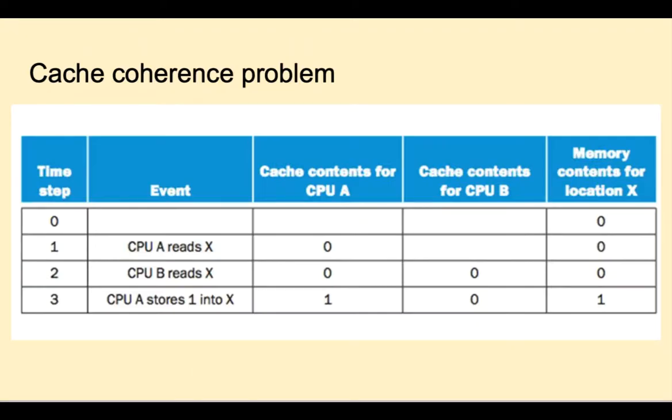Once we have more than one core on a system, we can have the cache coherence problem. Cores share the same physical address space. And this means that cores may end up with different values for a given location. That's shown in this table with four different time steps. At time step 0, memory location X contains a 0. CPU A or core A reads that value as 0. Time step 2, CPU B reads that value. At time step 3, CPU A updates that value to be 1. And now we have the cache coherence problem, where CPU A believes location X has a 1 and CPU B still thinks it's 0. A hardware protocol will be needed to resolve the cache coherence problem.